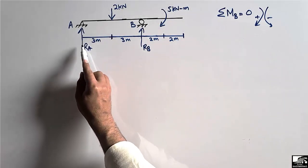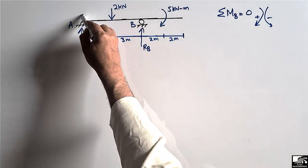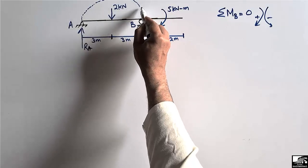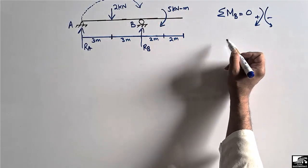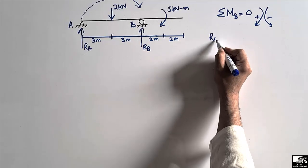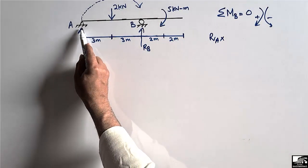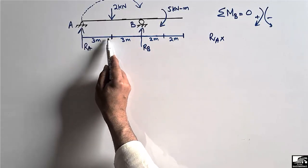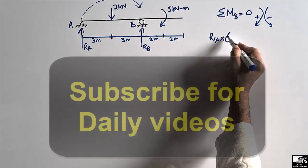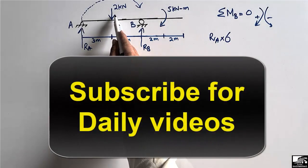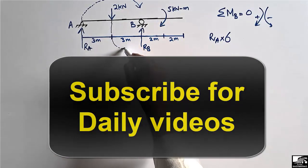Starting from this point, RA will create a moment about point B in the clockwise direction, so it will be taken as positive. It will be RA multiplied by the distance from RA to B, which is 3 plus 3, so the total distance is 6 meters. The 2 kN load also creates a moment about point B.